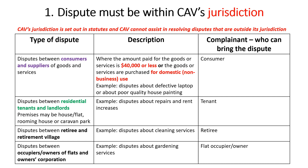The first is disputes between consumers and suppliers of goods and services, where either the amount paid for those goods or services is $40,000 or less, or those goods or services are purchased for domestic — that is, non-business — use. In such a case, a consumer, that is the purchaser of the goods or services, can request Consumer Affairs Victoria to assist them to resolve a dispute with the supplier. For example, a consumer might have a dispute about a defective laptop sold to the consumer — this costs less than $40,000, so the consumer could request Consumer Affairs Victoria to assist.